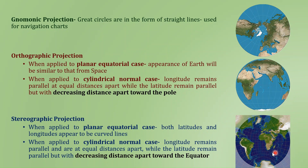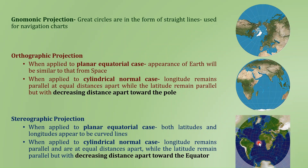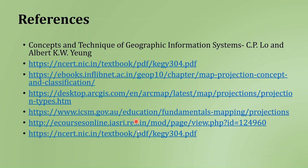In the case of the stereographic projection applied to the planar equatorial case, both the latitude and longitude appear to be curved lines. When applied to the cylindrical normal case, all longitudes remain parallel and at equal distance apart, but the latitudes remain parallel with decreasing distance towards the equator — the opposite of the orthographic case. So the distance between two latitude lines decreases as we move towards the equator, which is visible in the image where the distance is greater near the pole but decreases towards the equator.